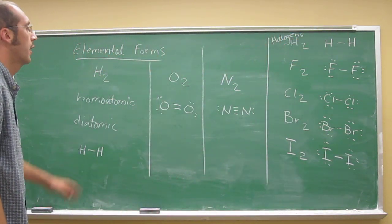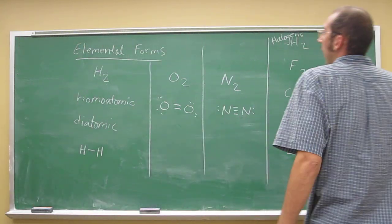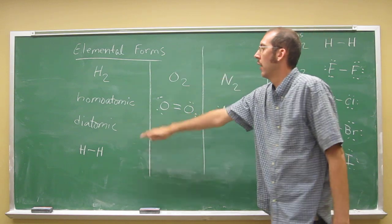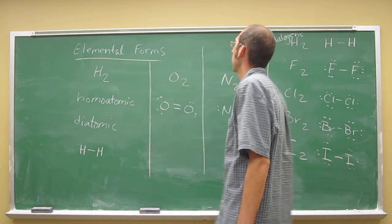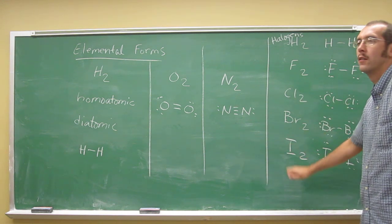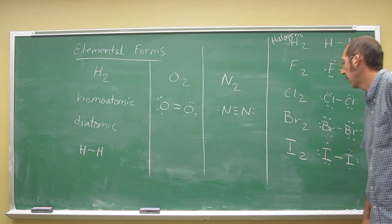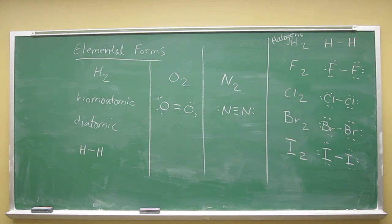So these are the - one, two, three, four, five, six, seven - the elemental forms of, or the diatomic elements. Okay, a lot of times you'll hear them called the diatomic gases, but bromine and iodine really aren't gases. Bromine is a liquid, and iodine is a solid. Although, they do exist in equilibrium with their gaseous form. If you have them in a sealed container, you can see it fairly readily.